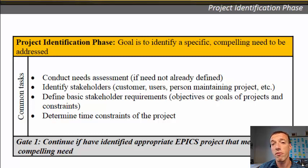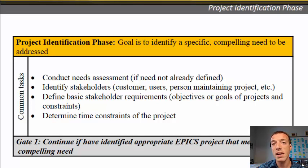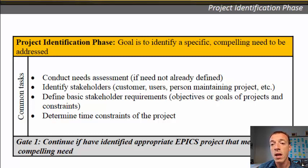You'll also need to identify any major scope issues and define the full scope of the project. One of the biggest problems in a project is scope creep, where the scope grows as you go along and you can never finish all the features you've added. This is the time to say: here's exactly what we're agreeing to, here's how long it should take, here's what the cost might be, and here's what we each contribute, so everybody understands exactly what you're doing. This phase ends when you have a compelling unmet need for the community partner.